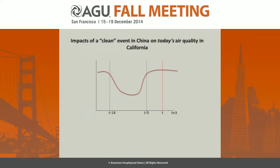Next we observe the impact of a lagged event from China on today's air quality in California, where the y-axis is marginal impact, the x-axis is time, and the red line is the contemporaneous effect. This shows the impact of a clean event in China — meaning an event that should reduce pollution emissions, like Chinese New Year or the Beijing Olympics. We focus on the five to 14 day period noted in the literature. Since these events last a few days, we don't use a daily lag model; instead we look at whether an event occurred one or two weeks ago from the first day of that event.